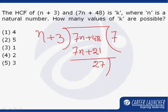Again it will come out to be n plus 3, so this 27 must divide n plus 3. So we can say that the HCF of these two numbers is a factor of 27.